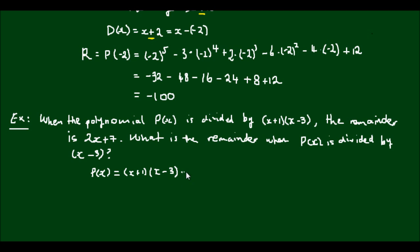the divisor times some quotient plus 2X plus 7, which is the remainder. Now what I'm going to do is multiply this X plus 1 term into the Q of X. And since I don't know what Q of X is, I'm going to call this product Q prime X. So Q prime X is equal to Q of X times X plus 1.